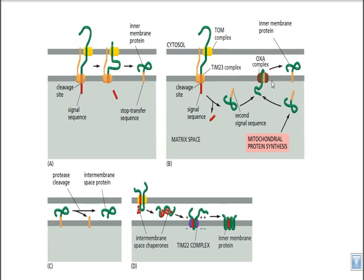The second signal sequence attaches to the inner mitochondrial membrane via another protein complex called the OXA complex. The OXA complex interacts with the second signal sequence and helps the protein fold properly at its destination. Finally, it makes a proper protein fold to create a fully functional inner mitochondrial membrane protein, embedded inside the mitochondrial inner membrane — that's how the OXA complex helps embed the protein.